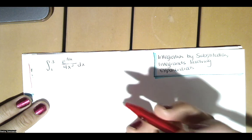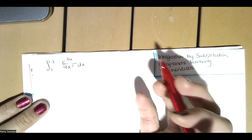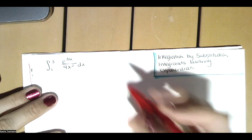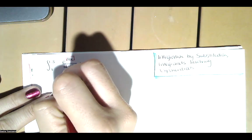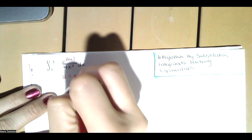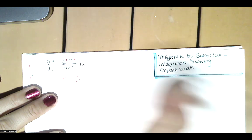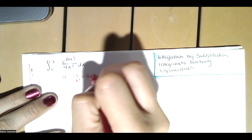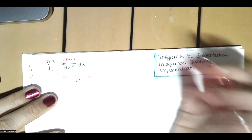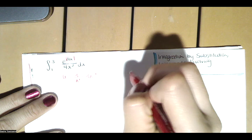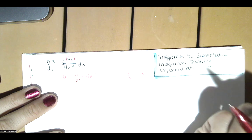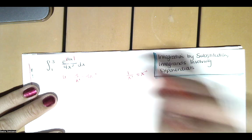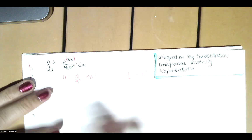If I'm going to use u-substitution, I need to look for a function nested inside another function. So I'm going to choose u equals 3 divided by x as my u. We can rewrite that as 3 times x to the negative 1 using our exponent properties. 1 divided by x to the first is x to the negative 1, so 3 divided by x is 3 times x to the negative 1.